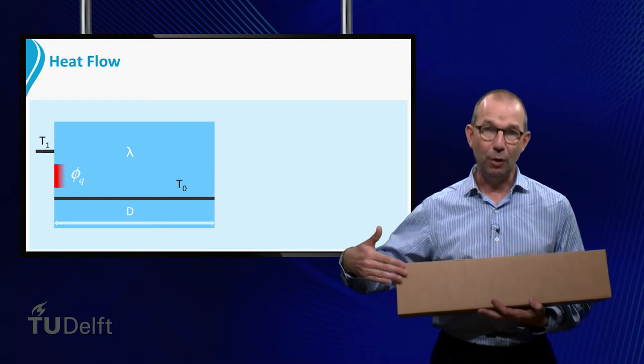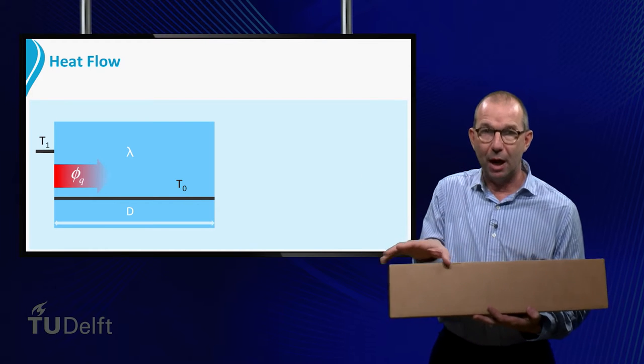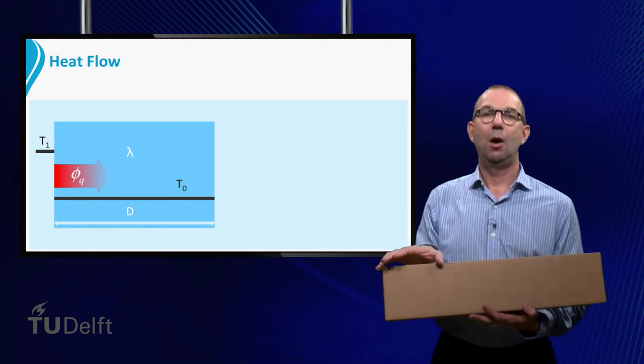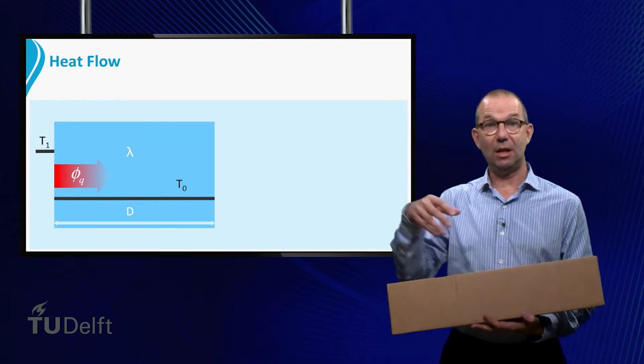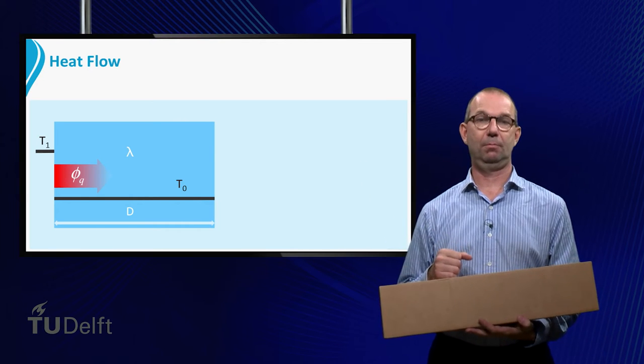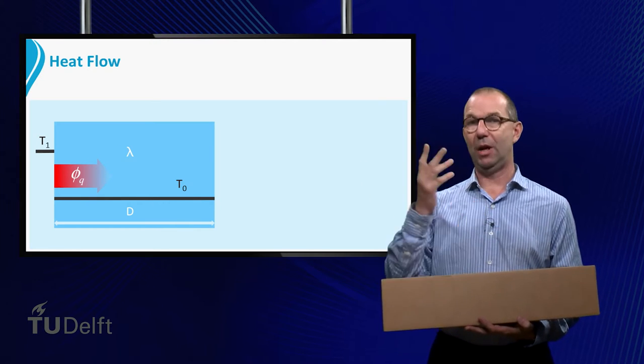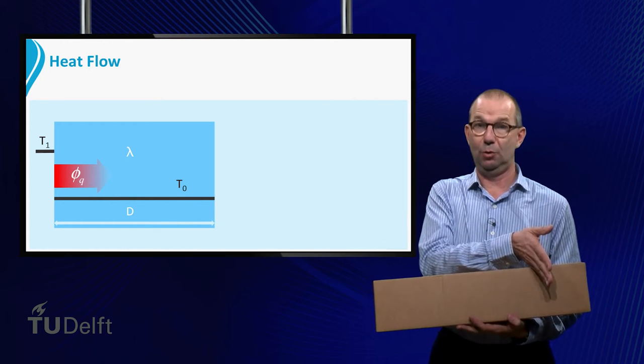Consequently, heat will flow into the plate. This heat will warm up the area close to the left boundary of the plate. While doing so, the flow will loosen its strength, as it leaves heat behind that is used to warm up the left part. So eventually all heat will be used and nothing is left that can further propagate into the plate.